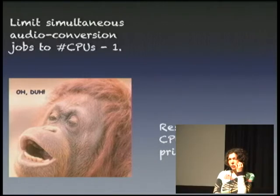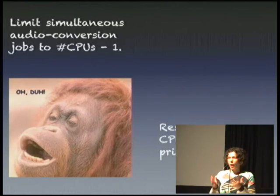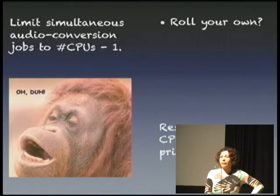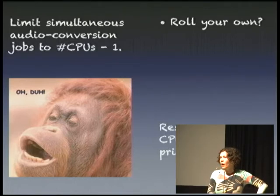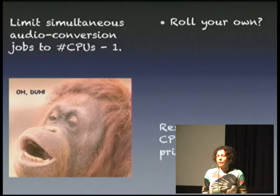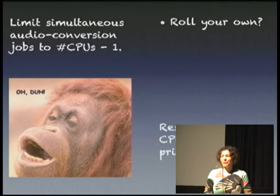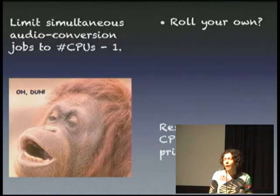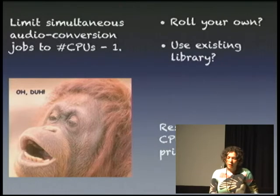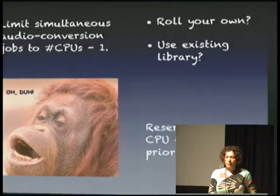The answer is easy: we can limit simultaneous jobs to the number of CPUs minus one, and leave one for other important work. This seems like a super easy problem — just keep some counter of how many jobs are running. We could certainly roll our own code to do it. In fact, roll-your-own anything is a very tempting choice for an Erlang developer, because accomplishing anything in Erlang takes maybe five to ten times less resources than in most other languages. But we're really busy with actual business requirements and tight deadlines, so we decided to look for an existing library.